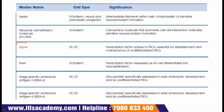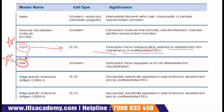The most important factor is OCT4, and the next one is PAX6, also very important. OCT4 is present on embryonic stem cells and embryonic carcinoma cells. OCT4 is a transcription factor unique to pluripotent stem cells, essential for establishment and maintenance of undifferentiated pluripotent stem cells. PAX6 is again for ectoderm and is a transcription factor expressed as embryonic stem cells differentiate into neuroepithelium.